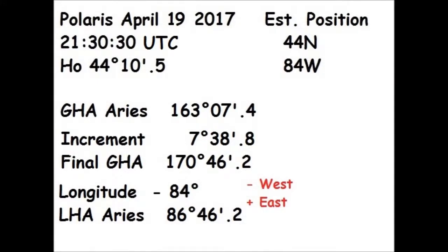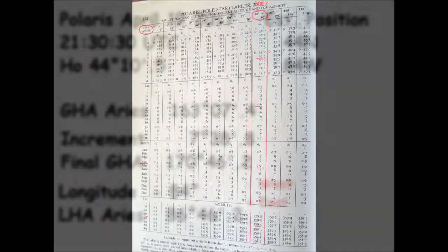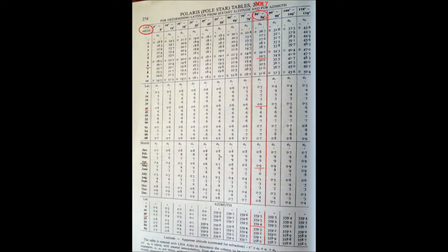You then add or subtract your longitude. In this case we're west, so we subtract 84°, and that gives us the LHA of Aries of 86° 46.2 minutes. Next, you're going to look for the Polaris Polestar tables.